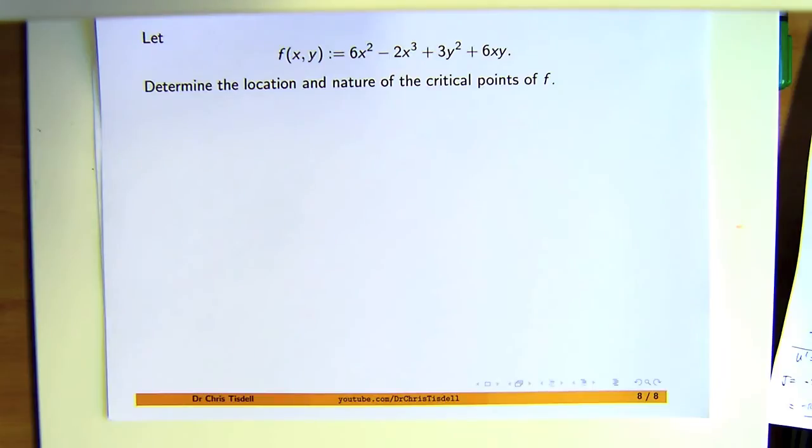So what that means is we want to find out where the critical points are and what kind of behavior they lead to in our f: a local min, a local max, or something in between, a saddle point.